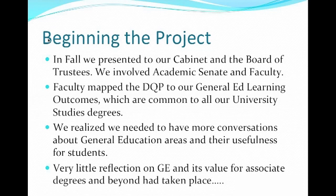To begin the project, after we had gone to the initial training and conference, we made a presentation to our Cabinet and the Board of Trustees. We also involved the Academic Senate and faculty generally. Faculty who were involved mapped the DQP to our general education learning outcomes, which are common to all of our University Studies degrees — they all have a GE component and then a specific area of emphasis. As we did that, we realized we needed to have more conversations about general education areas and their usefulness for students.